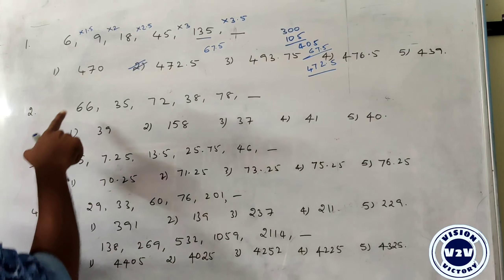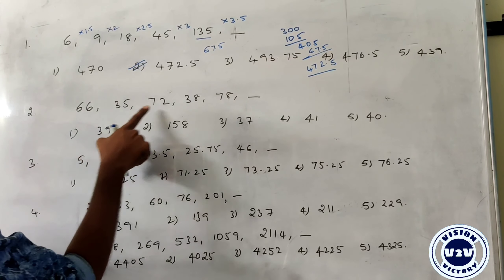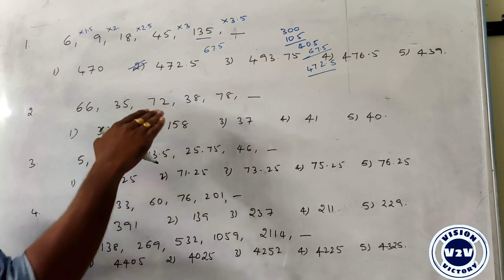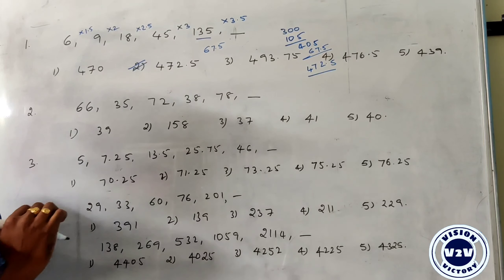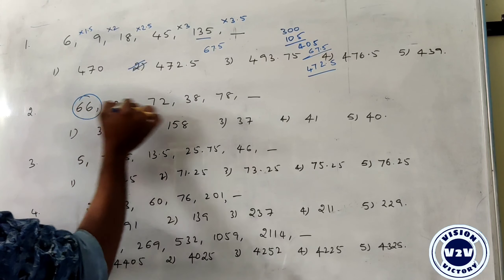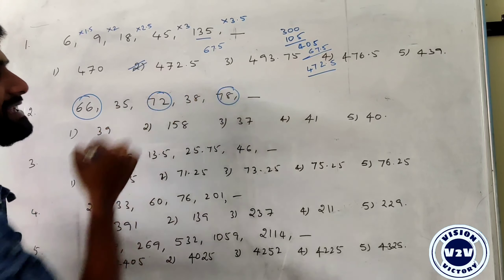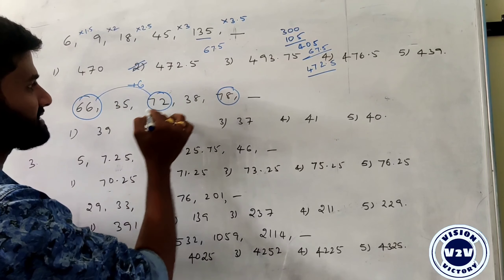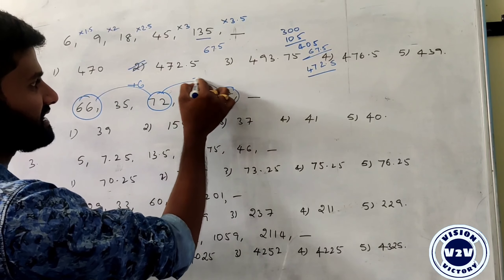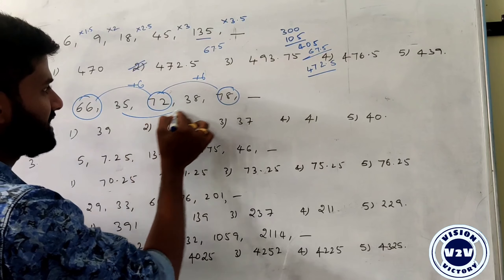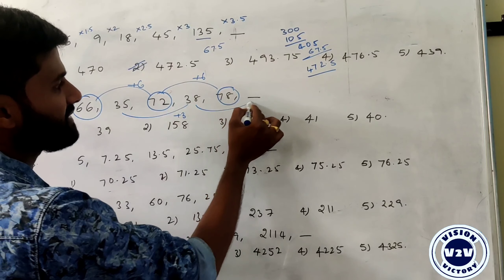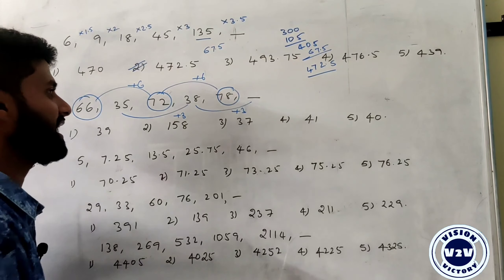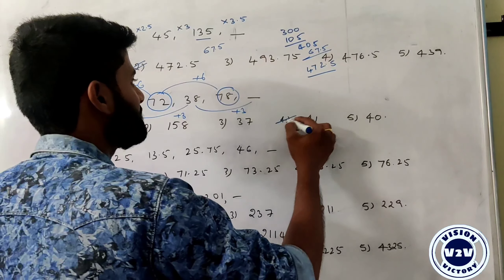Next question: 66, 35, 72, 38, 78. This is an alternating series. Every alternate number maintains a common difference. The difference between 66 and 72 is plus 6, and again plus 6. For the other subsequence, the difference is plus 3. So 38 plus 3 gives 41.